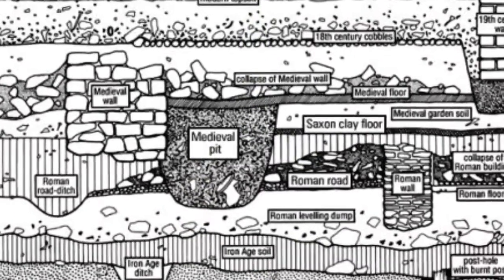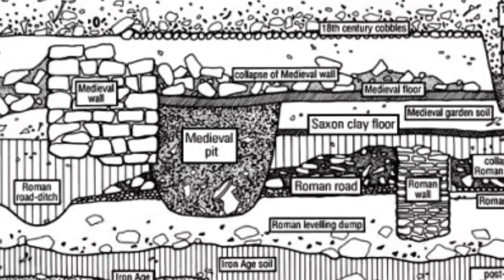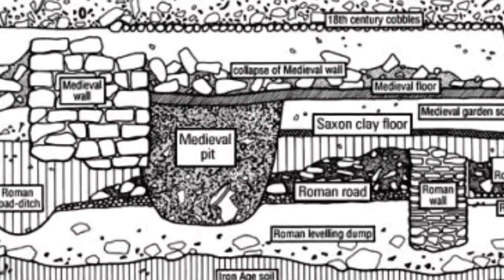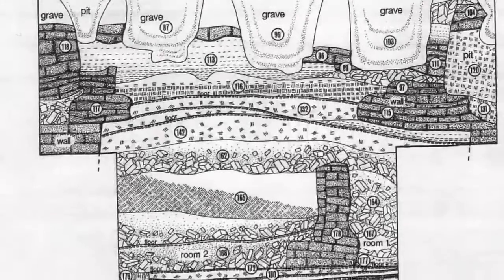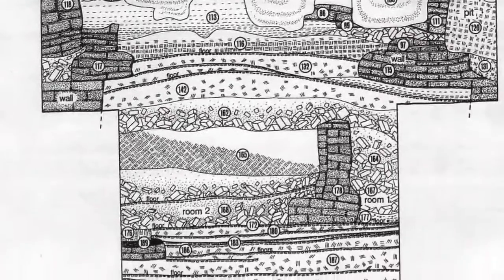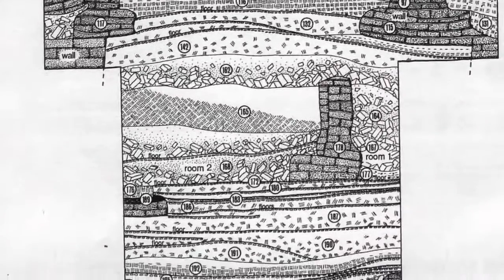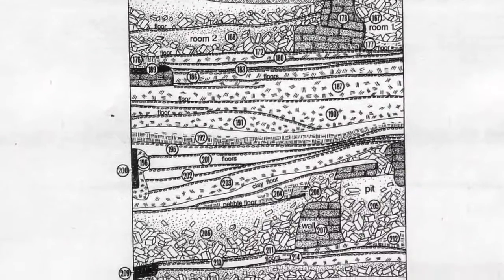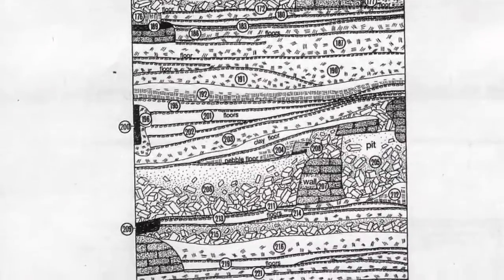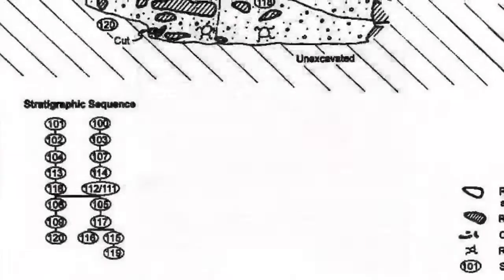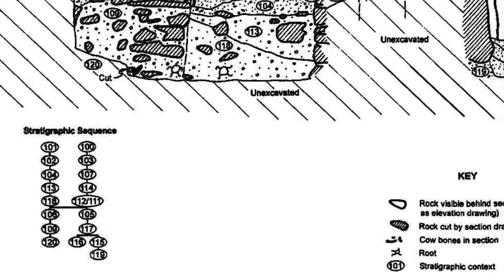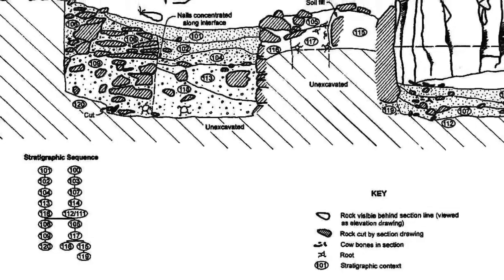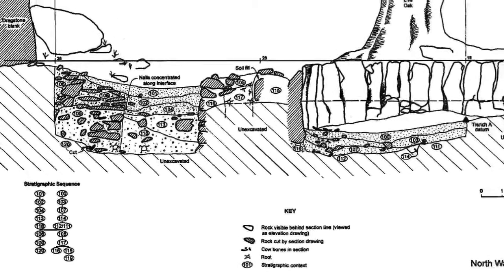In this way, the rather subjective elements of drawing a site can be boiled down, and more importantly, made clear for those people who come later on to the excavation. Just by using numbers for each feature, the Harris Matrix has revolutionized the publication and communication of archaeological data.